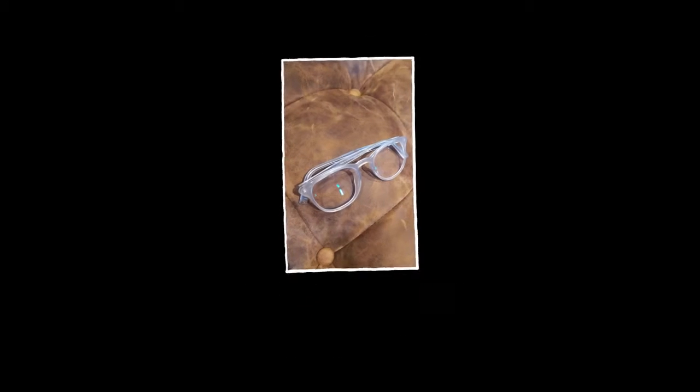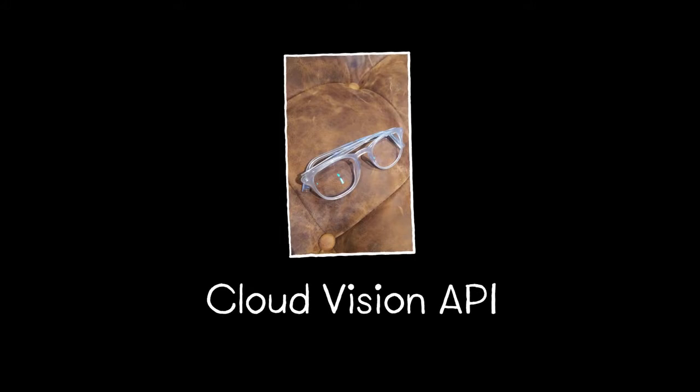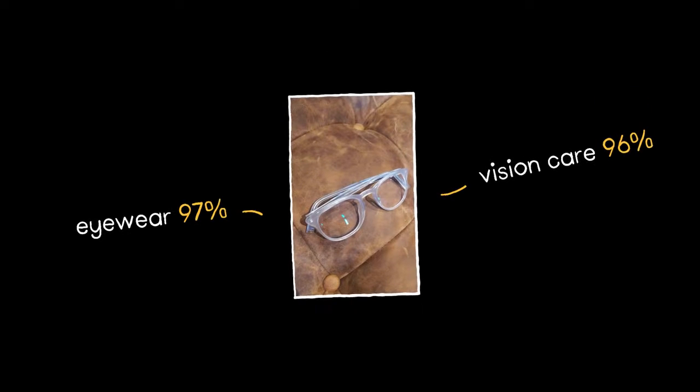Hello. For image recognition, we use the Cloud Vision API. You can just send it a picture and it returns labels for what it sees, along with the confidence scores.